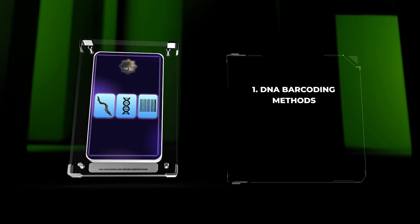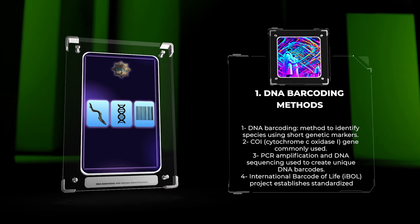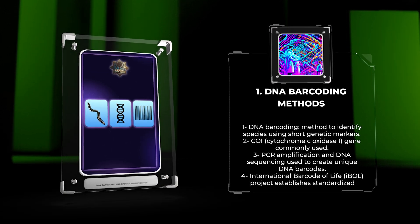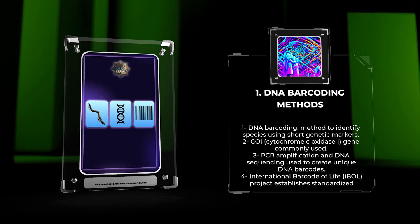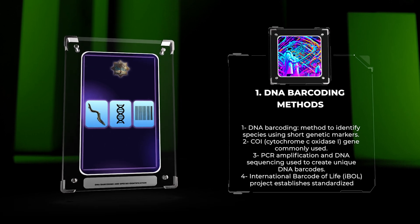DNA barcoding is a method to identify species using short genetic markers. The cytochrome C oxidase I (COI) gene is commonly used, as it shows variations between species but remains consistent within the same species. Techniques like PCR amplification and DNA sequencing are utilized to create unique DNA barcodes for each species.